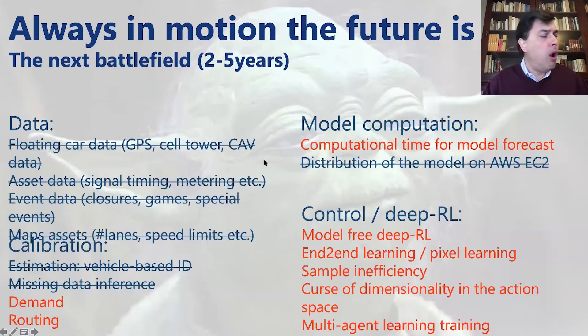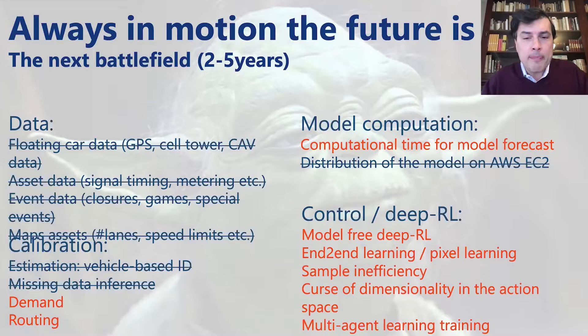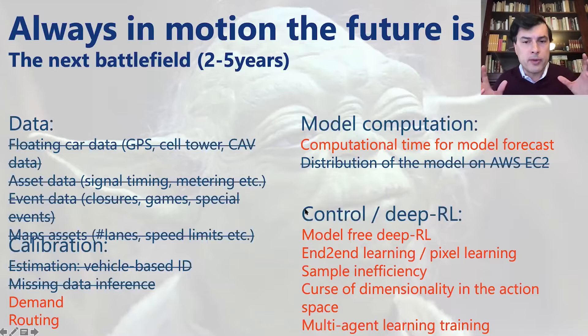One of the challenges we see in using microsimulations as an engine for control is calibration, computation, and the control layer on top. Microsimulation is really expensive to run. If you do an algorithm that requires multiple iterations — common in reinforcement learning and deep RL — the cost gets multiplied by the number of iterations and very quickly becomes intractable.